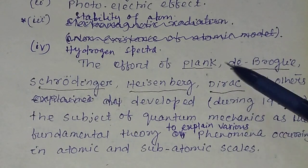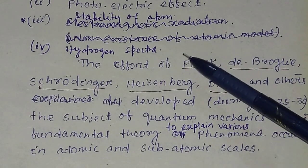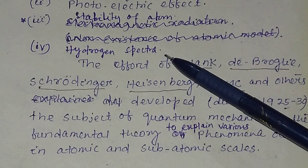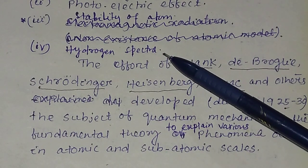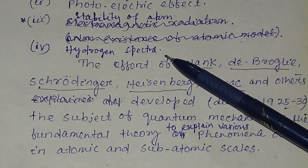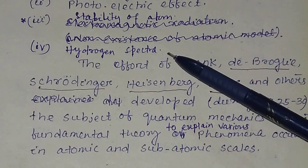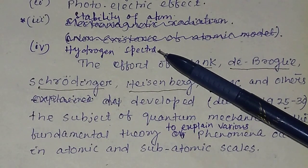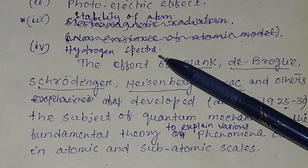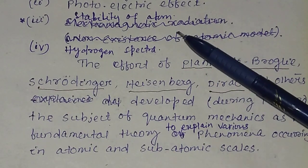Classical theory also failed to explain the spectrum of the hydrogen atom, that is the hydrogen spectra. Another problem in classical physics is explaining the stability of the atom.